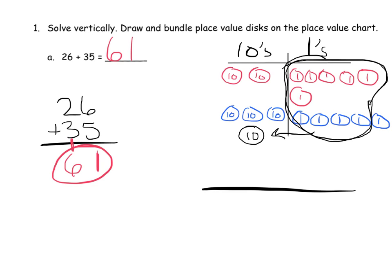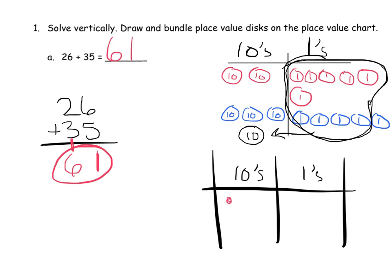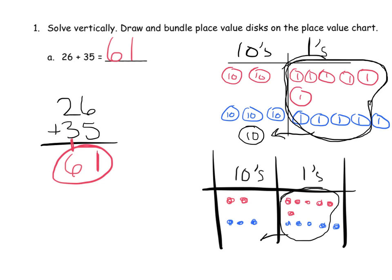Down the road, kids are just going to use dots. To model 26, they'll draw two dots in the tens and six in the ones; for 35, three dots in the tens and five in the ones. Then six and four gives ten, that ten moves to the tens place, leaving one in the ones and six total in the tens. This is just a sneak preview — right now we want second graders using the drawn circles.